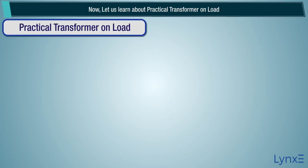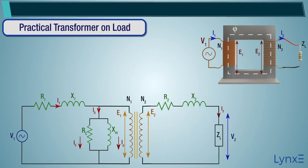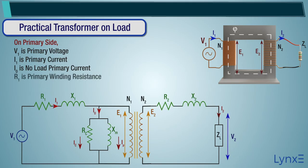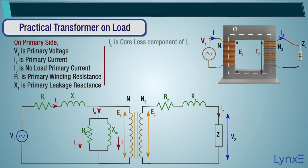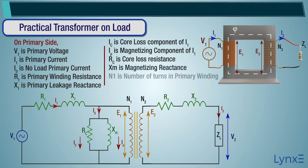Now let us learn about practical transformer on load. Here, the secondary side is close-circuited with a load. Its equivalent circuit diagram shows on the primary side: V1 is primary voltage, I1 is primary current, I0 is no load primary current, R1 is primary winding resistance, X1 is primary leakage reactance, IC is core loss component of I1, I mu is magnetizing component of I1, IC is core loss resistance, XM is magnetizing reactance, N1 is number of turns in primary winding, and E1 is primary induced EMF.